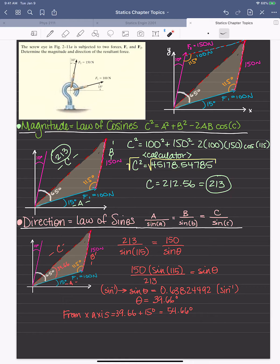And then this one for the direction, we use the law of sines. And this is the formula. And because we had already solved for c, and we do already know that the angle that corresponds to c is 115, we're going to use that and solve for our angle theta. So that's what we're going to do down here.